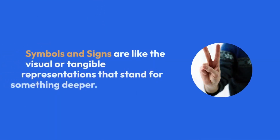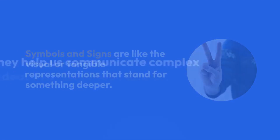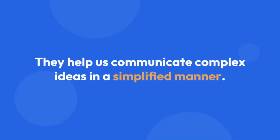The third aspect of culture is symbols and signs. Symbols and signs are like the visual or tangible representations that stand for something deeper. They help us communicate complex ideas in a simplified manner.